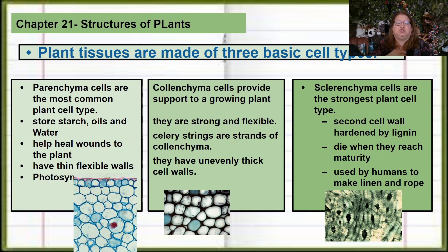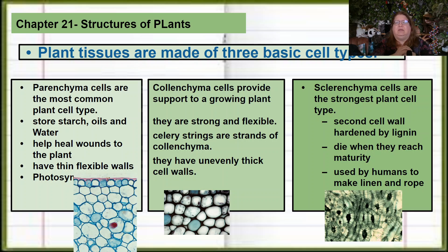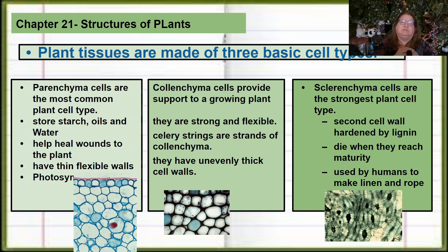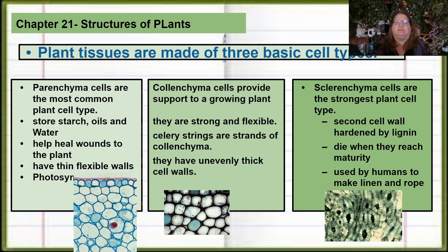Sclerenchyma would be the strongest plant cell type. They have lignin, which is what wood is made of. They have bigger, thicker cell walls, and a lot of these are dead when they reach maturity. Think about the parts of wood and what we might use for rope — that would be sclerenchyma. Think of the S in sclerenchyma standing for strong — that's a good way to remember it.